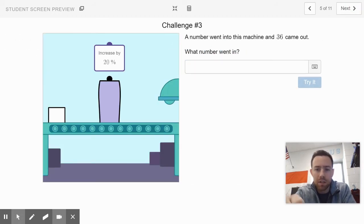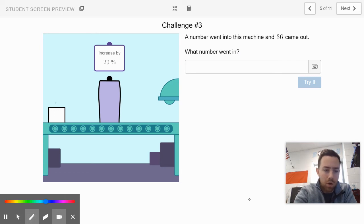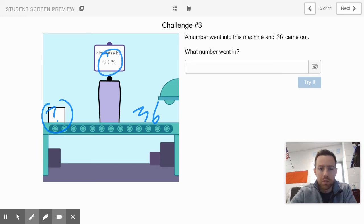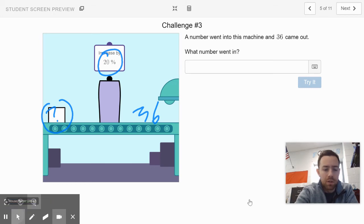Slide five says a number went into this machine. You don't know what number it is, but you know that 36 came out and it increased by 20 percent. I want you to tell me what number you think went in. Something that increased by 20 percent and became 36.